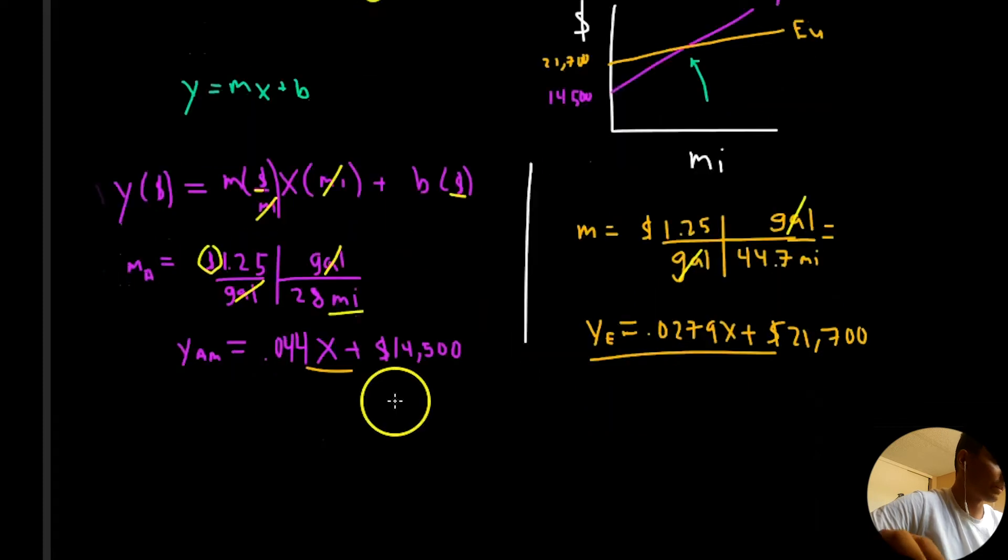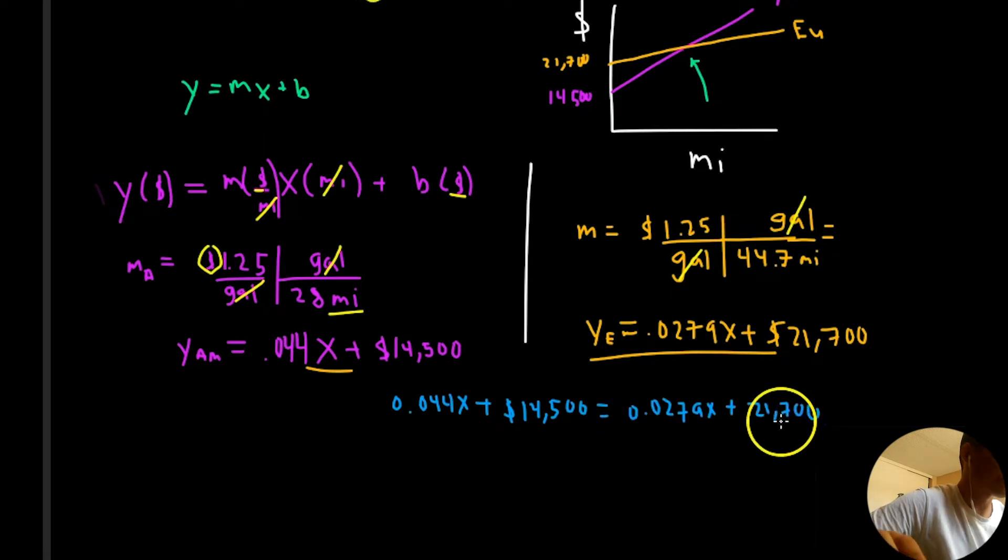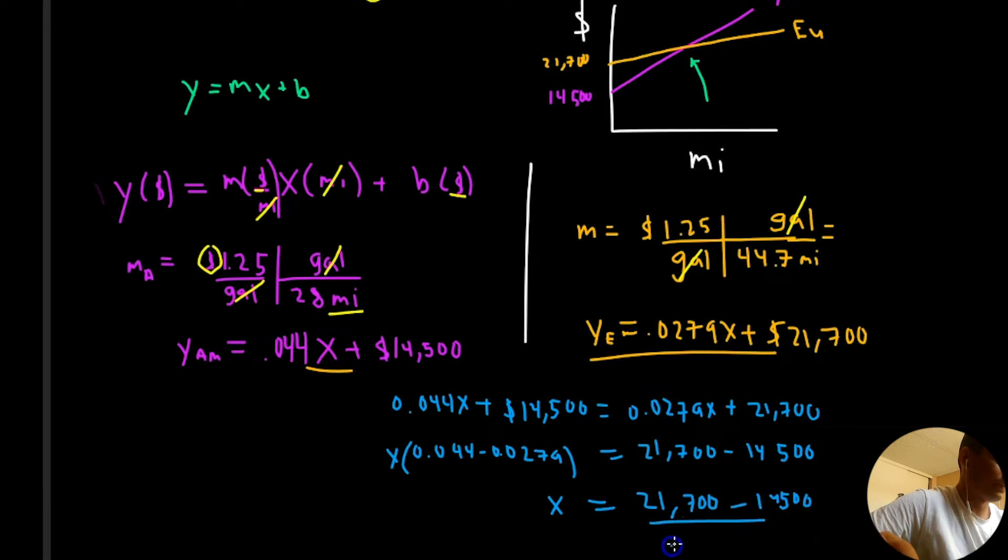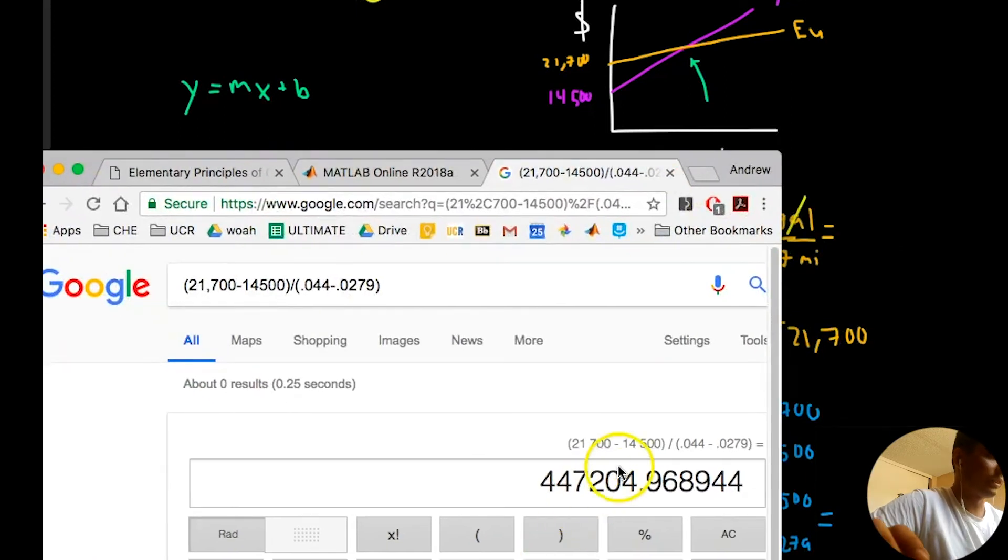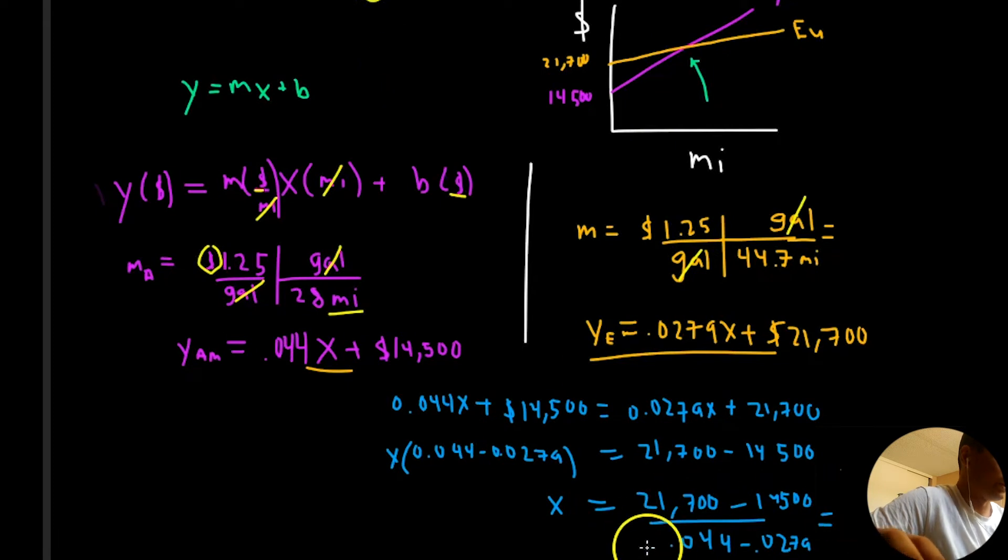Now, all we've got to do is simply set these two guys equal to each other and solve. American equal to European. Highly recommend you do this by yourselves, guys. Everyone does algebra differently. x is simply going to be 21,700 minus 14,500 all over, it's just some mathematic gymnastics. Everyone's just got to do this sometimes in engineering. The answer is 447,000 miles. That's insane. My answer is a little bit off because I didn't carry that conversion, but it's 447,000 miles.